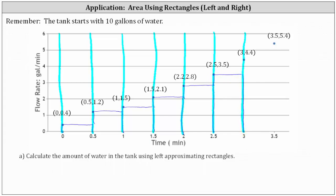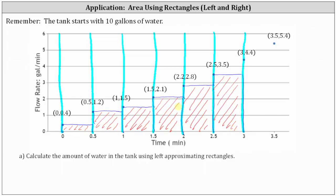Let's go ahead and shade the area of the rectangles. To find the area of each rectangle, we are going to multiply the width — which is the time in minutes — by the height, which is the flow rate in gallons per minute. Minutes times gallons per minute gives us gallons, the amount of water added to the tank over that subinterval of time. Because all the rectangles have a width of 0.5 minutes, we can factor that out.